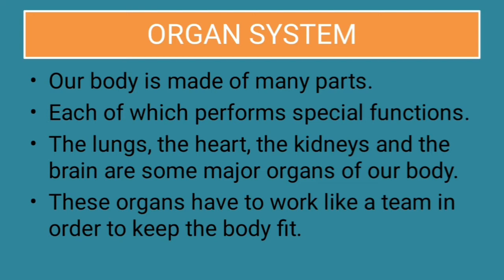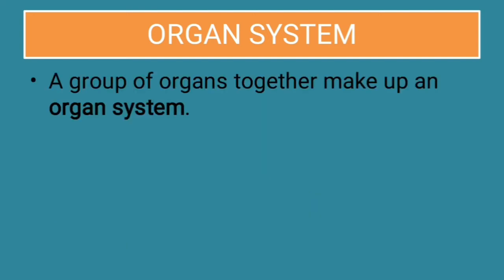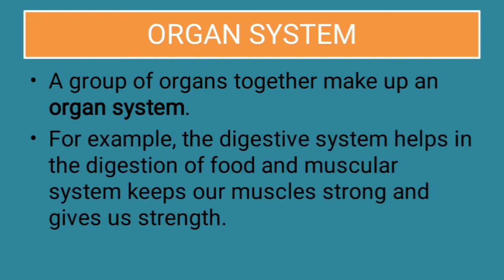Similarly, our organs are team members, and if one organ doesn't function properly, it affects the entire body. So every organ should work like a team with other organs. A group of organs together make an organ system. For example, the digestive system helps in digestion of food, and the muscular system keeps our muscles strong and gives us strength. There are also different systems like the nervous system in our body.